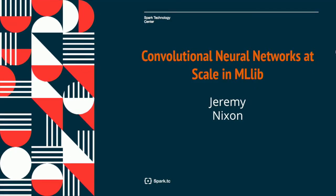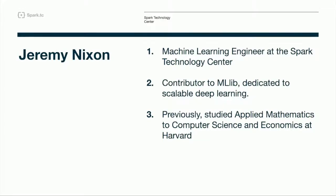My name is Jeremy Nookson from the Spark Technology Center. I'm here to present work on core deep learning inside of MLLib, inside of Spark. I graduated in applied math and CS at Harvard and went to the Spark Technology Center to contribute to machine learning. I've mostly been working inside of MLLib. I'm the author of the deep neural network regression algorithm in MLLib, and this is about increasing the ability for data scientists to access deep learning inside of MLLib.